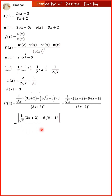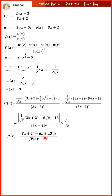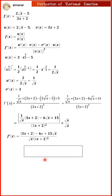Multiplying and dividing by the square root of x to eliminate the radical in the denominator, we find f prime of x equals 3x plus 2 minus 6x plus 15 times the square root of x, all divided by the square root of x multiplied by 3x plus 2, squared. Simplifying, we get f prime of x equals negative 3x plus 15 times the square root of x plus 2, all divided by the square root of x multiplied by 3x plus 2, squared.